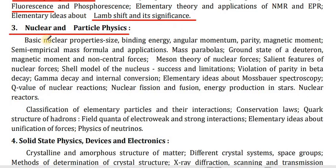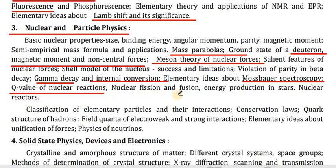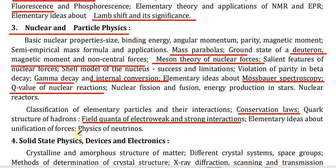Point 3 — Nuclear and Particle Physics: basic nuclear properties — size, binding energy, angular momentum, parity, magnetic moment, semi-empirical mass formula and applications, mass parabolas, ground state of deuteron, magnetic moment and non-central forces, meson theory of nuclear forces, salient features of nuclear forces, shell model of nucleus — successes and limitations, violation of parity in beta decay, gamma decay and internal conversion, elementary ideas about Mössbauer spectroscopy, Q-value of nuclear reactions, nuclear fission and fusion, energy production in stars, nuclear reactors, classification of elementary particles and their interactions, conservation laws, quarks, structure of hadrons, field quanta of electroweak and strong interactions, elementary ideas about unification of forces, physics of neutrinos.